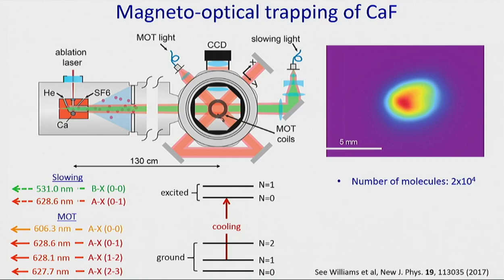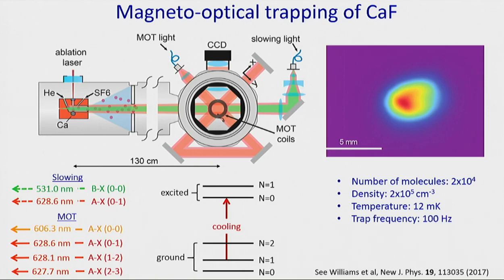This works very well. Here's a picture of one of the first MOTs we ever made, showing laser-induced fluorescence on the CCD camera. This MOT contains about 2×10⁴ molecules, with a density of 2×10⁵ per cubic centimeter. The temperature is about 12 millikelvin, the trap frequency is about 100 hertz, and the lifetime of the MOT is about 100 milliseconds.